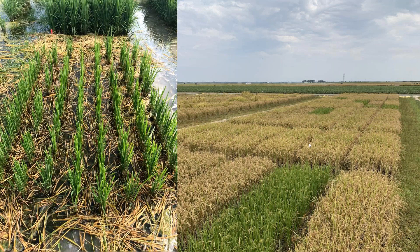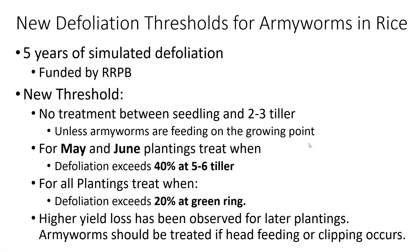After defoliation, rice grows back surprisingly fast — but at serious defoliation levels you see a delay in maturity that's easy to pick out in plots. Based on this work, our new thresholds for armyworms in rice are: no treatment needed from seedling to two to three tiller stage for May and June plantings; treat when defoliation exceeds 40 percent at the five and six tiller stage; and for the green ring stage, treat at 20 percent defoliation at any planting date, given the higher observed yield loss with later plantings.